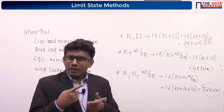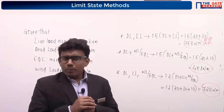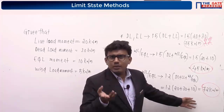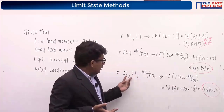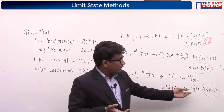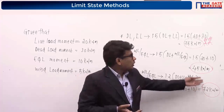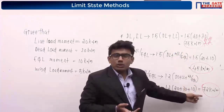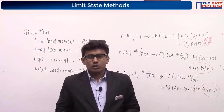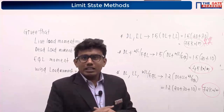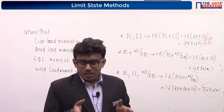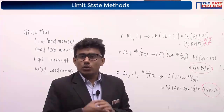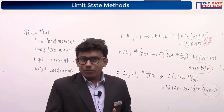Practice solving questions on your own using previous IES questions and test series. You will make mistakes — for example, many gave 72 as the answer instead of taking the maximum of all three combinations which is 75. Learn from your mistakes; that is the path to success.